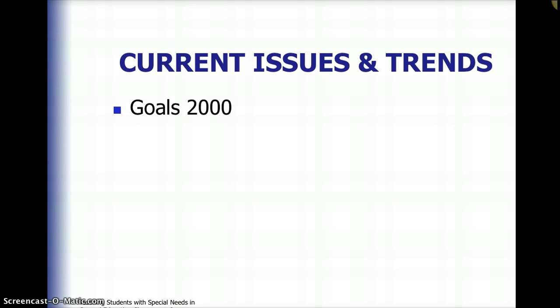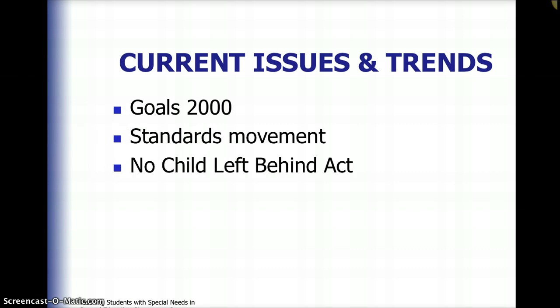Current issues and trends have shaped education significantly. Goals 2000 aimed for all children to start school ready to learn, a 90% high school graduation rate, the U.S. to be first in the world in math and science, and every adult to be literate. Clearly we haven't reached Goals 2000 — it's 2015 — although the emphasis on literacy has increased awareness and ramped up efforts. High school graduation rates are up overall, so some progress has been made.